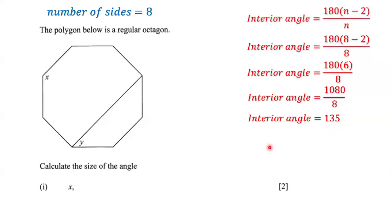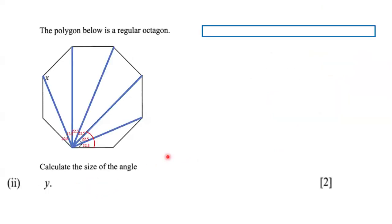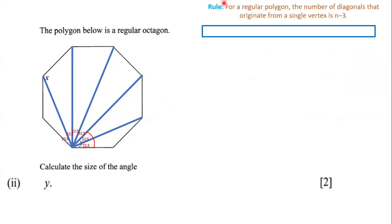So the size of angle x, or the size of an interior angle of this regular octagon, is 135 degrees. Next, our goal is to determine the size of angle y, and we are going to use diagonals to do that. The rule states that for a regular polygon, the number of diagonals that originate from a single vertex is n minus 3.